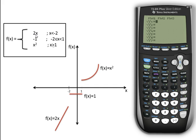So our equation equals 2x for x is less than negative 2. What we'll want to do is open up a set of parentheses and enter in our function 2x and close up the parentheses.